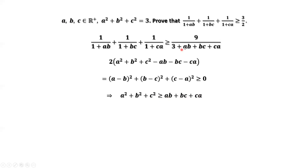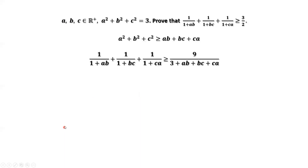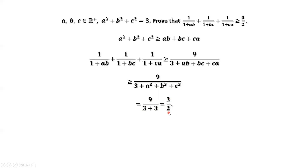Now we replace AB plus BC plus CA in the denominator by the larger value A squared plus B squared plus C squared — because it is in the denominator, the inequality direction should be bigger than or equal to. Replacing this part by A squared plus B squared plus C squared, which equals 3, we get 9 over (3 plus 3), which is 3 over 2. This is the final result. Thanks for watching and see you next time.